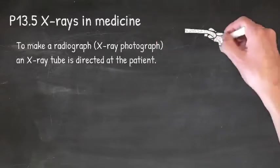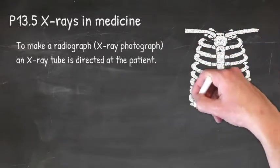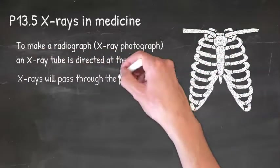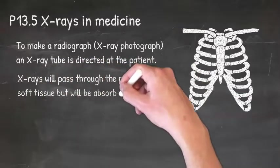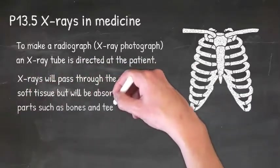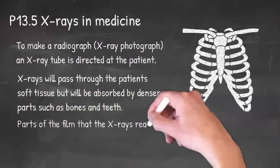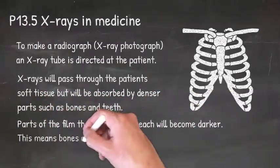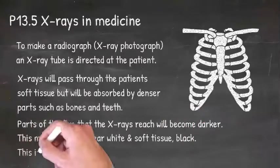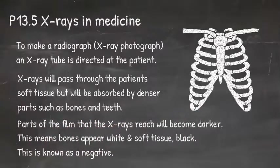To make a radiograph or an X-ray photograph, an X-ray tube is directed at the patient. X-rays will pass through the patient's soft tissue, but will be absorbed by denser parts such as bones and teeth. Parts of the film that the X-rays reach will become darker. This means bones appear white and soft tissues black. This is known as a negative.